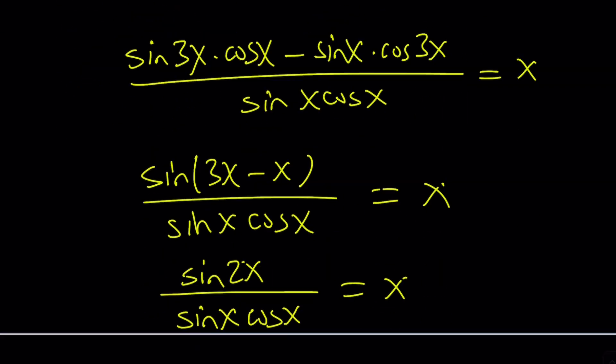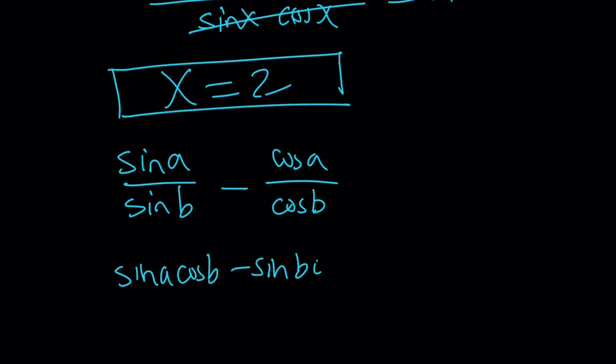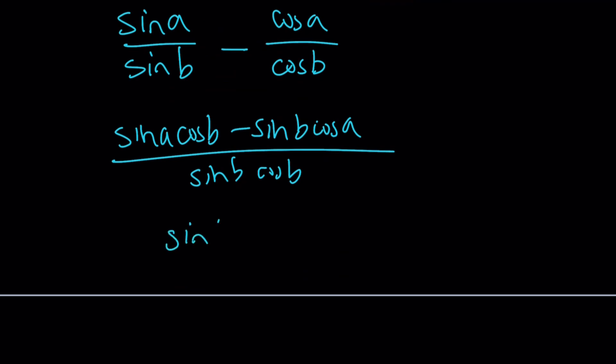Now, we can come up with a general form for this. So, whenever you have something like sin(a)/sin(b) - cos(a)/cos(b)... So, by the way, a and b can be pretty much any angle. It doesn't matter. But as long as you have this, we can do the following: sin(a)cos(b) - sin(b)cos(a) divided by sin(b)cos(b). And the top becomes sin(a - b) divided by sin(a)cos(b). I mean, in this case, we had a double angle. We were able to simplify, but it's not always going to simplify like that.